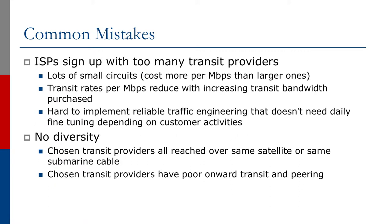Common mistakes that people make include signing up with too many transit providers, because they then end up with lots of small circuits which cost more per megabit per second than equivalent larger ones. Transit rates per megabit per second reduce with increasing transit bandwidth purchased, and it becomes really hard to implement any type of reliable traffic engineering that doesn't need daily fine-tuning depending on customer activities.